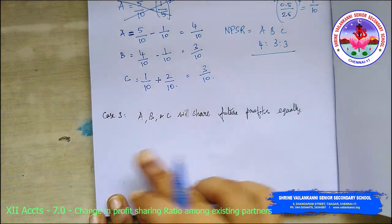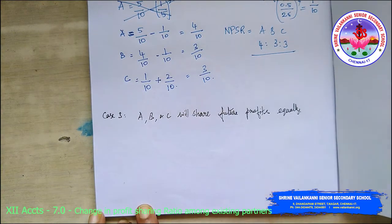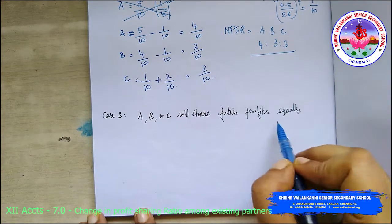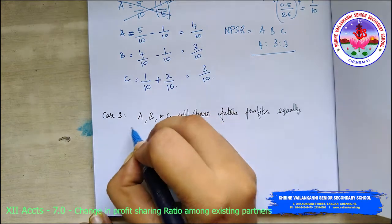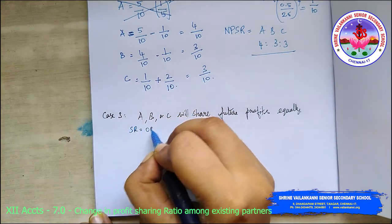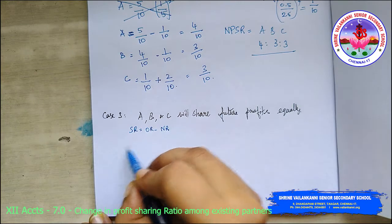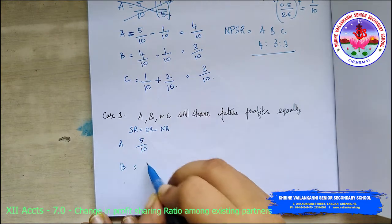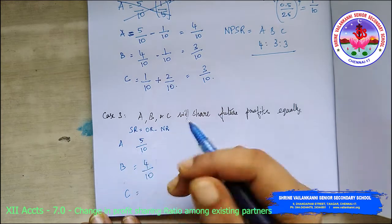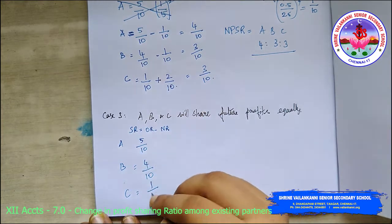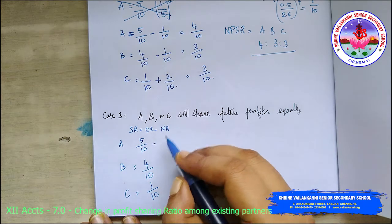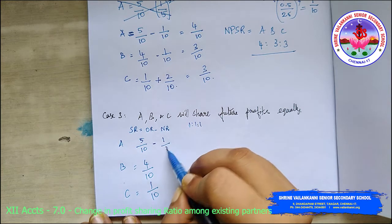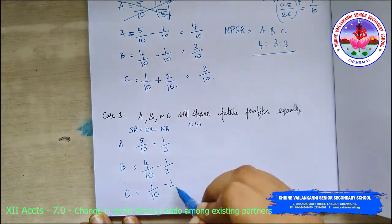Case 3: A, B, C will share future profits equally, meaning 1:1:1. Sacrificing ratio is old ratio minus new ratio. Old ratio is A=5/10, B=4/10, C=1/10. New ratio since it is equal is 1/3 each.